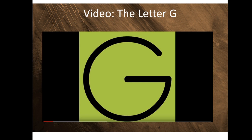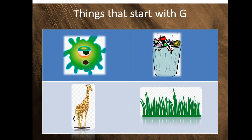Did you like the video? Now we are going to talk about more things that start with G. Remember I told you that G also makes a j sound. This is a germ — it starts with G and makes the j sound: germ. This is garbage — it makes the g sound: garbage.